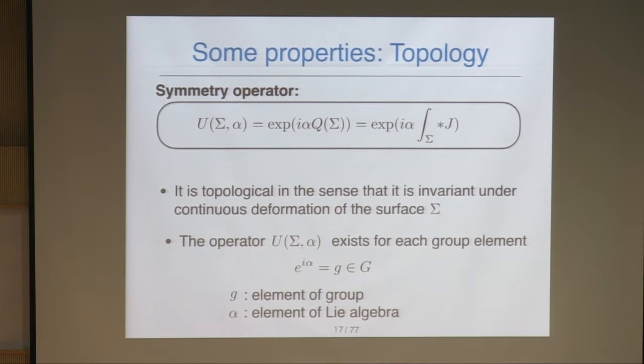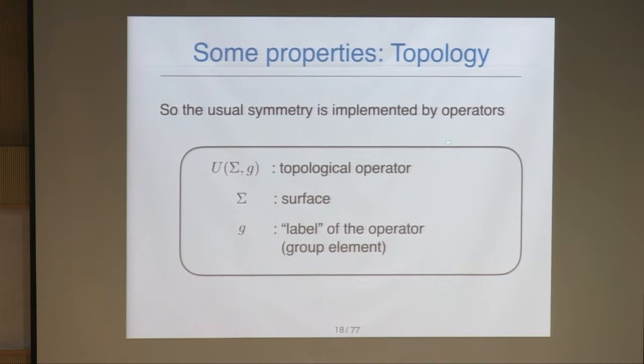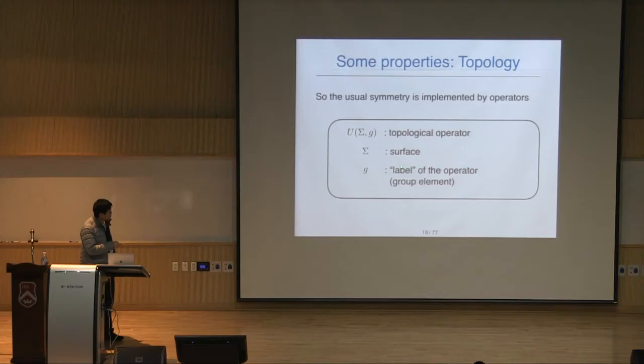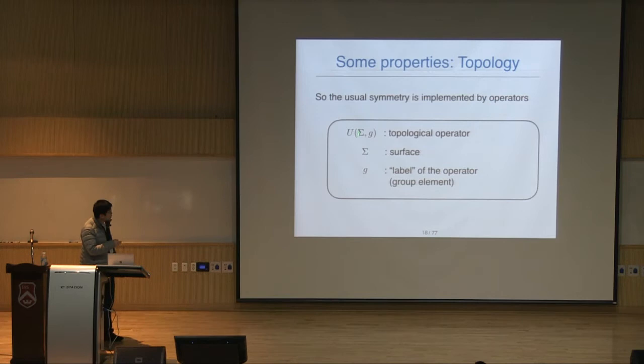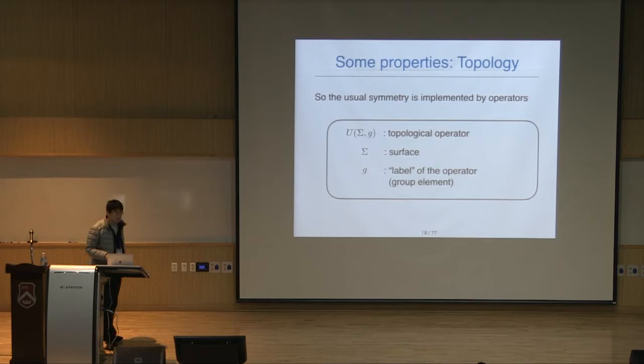To summarize: the usual symmetry is implemented by the operator U, which is a topological operator. It is labeled by a group element G and is supported on a surface σ. I derived this in the case of continuous symmetry, but now we can ask several questions.